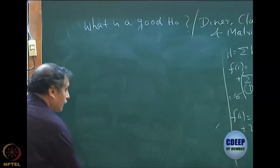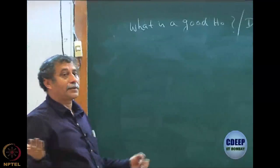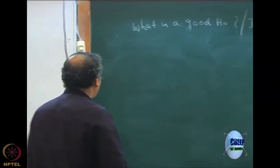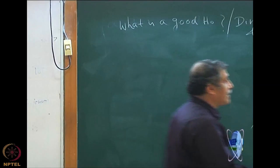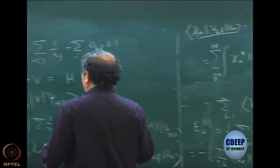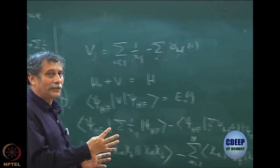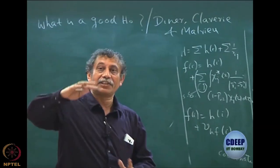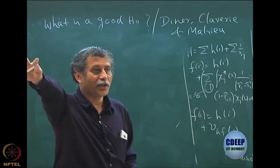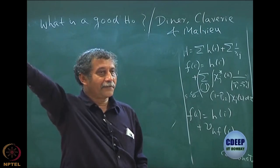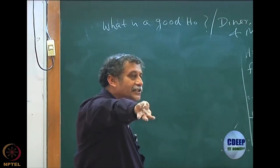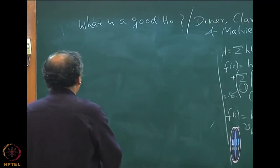I come back to this question of different ways of doing H0. One of the overriding criteria is to make E00 equal to E Hartree-Fock. One approach is to add to H0 a term E01 and then subtract in V. With this, MP1 is still zero.